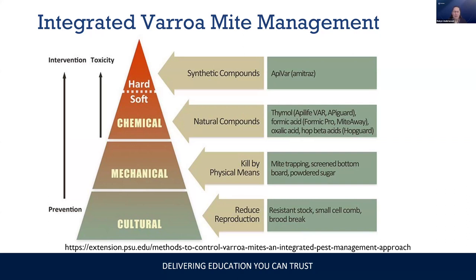The IPM pyramid has at its base cultural controls, aimed at reducing the reproduction of our pest. Moving up the pyramid, you have actually killing the pest without chemicals, and then at the top, using chemicals to do that control. At the bottom we have prevention of a problem, and as we move up we move toward intervention.